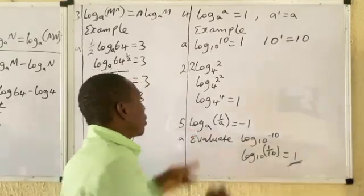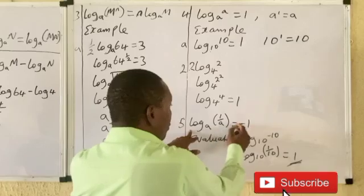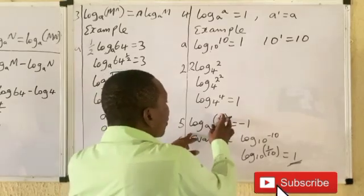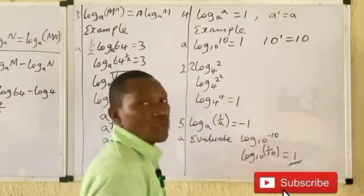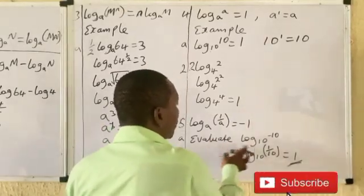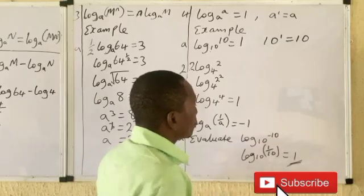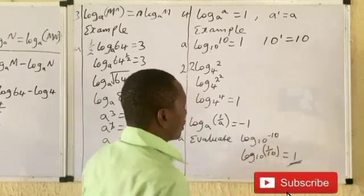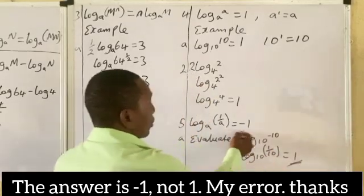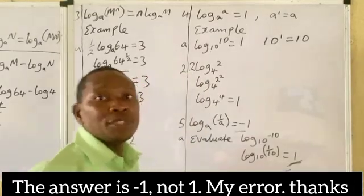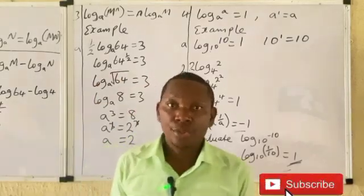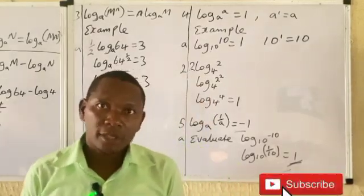Another law: log base a of (1 over a) equals minus 1. Remember, 1 over a is the same as a to the power minus 1. For example, log base 10 of (1 over 10) equals minus 1. In my next video I'll be taking questions and answers and solving some challenging questions on the laws of logarithms. Thank you for watching.